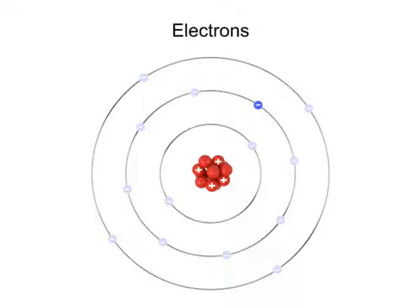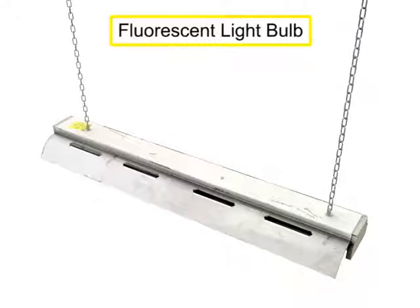This repeating sequence of electron excitation followed by de-excitation is the basis for the functional capacity of a fluorescent light bulb.